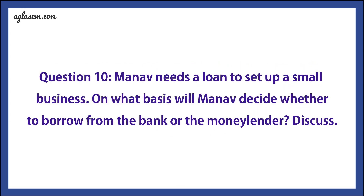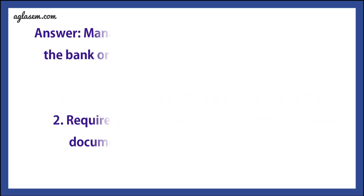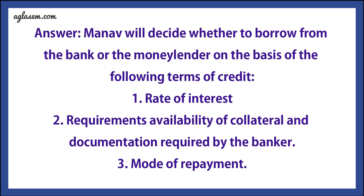Question 10: Manov needs a loan to set up a small business. On what basis will Manov decide whether to borrow from the bank or the money lender? Answer: Manov will decide on the basis of the following terms of credit: first, rate of interest; second, requirements — availability of collateral and documentation required by the bank; third, mode of repayment.